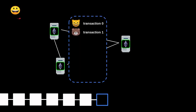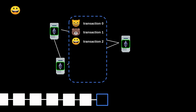Here we have Alice and she wants to send a transaction to the Ethereum network. There are other users that have already submitted their transactions and are waiting for their transactions to be mined on this block. The place where these pending transactions — the transactions that are yet to be mined — are stored is called the mempool. Everyone can see all of the pending transactions inside the mempool. Alice submits her transaction, and her transaction gets included in the mempool.